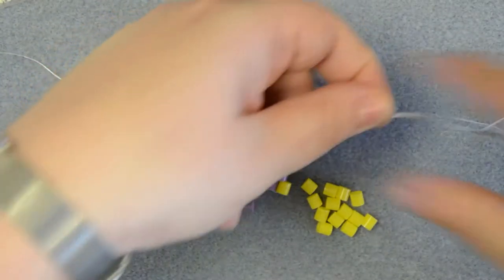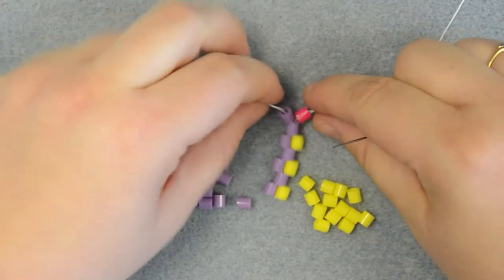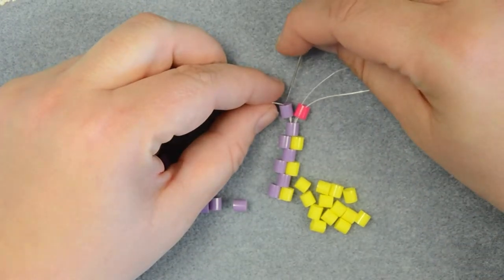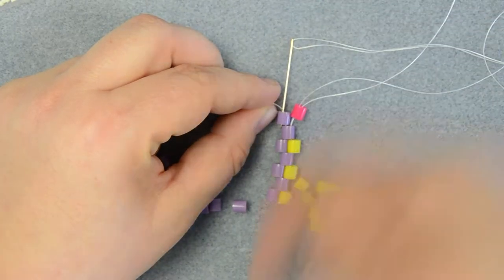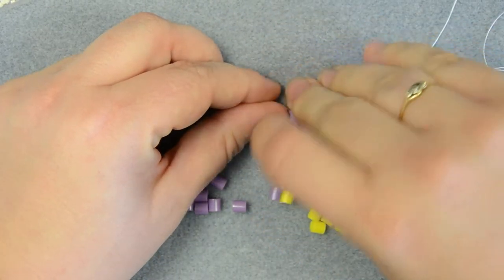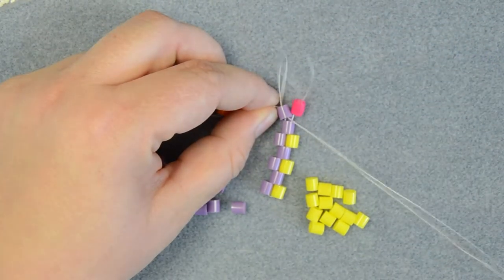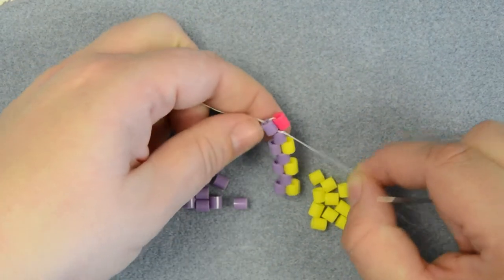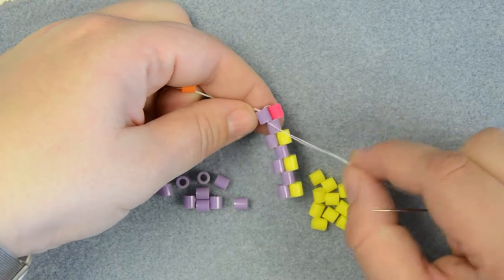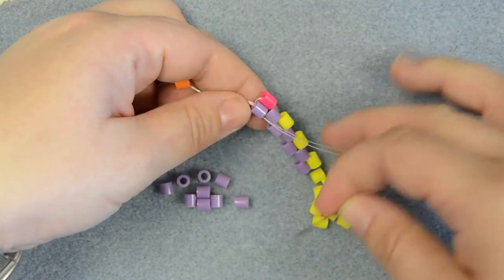Then what we're going to do is we're going to come through the purple bead from the row below back towards the work, and then we have to—that's going to hold the bead in place—and then we have to turn the needle around because the needle is in the wrong place for working.